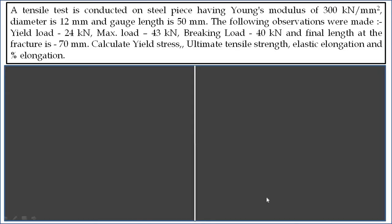Let us consider a small example on tensile test. A tensile test is conducted on a steel piece having Young's modulus of 300 kN per mm square. Diameter is 12 mm. Gauge length is 50 mm.